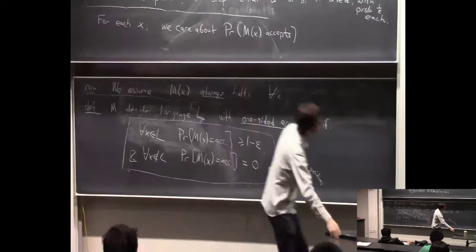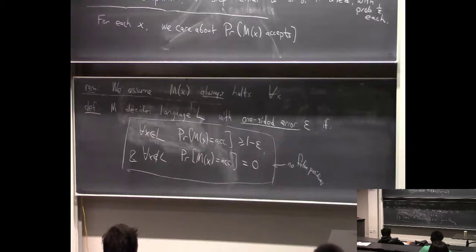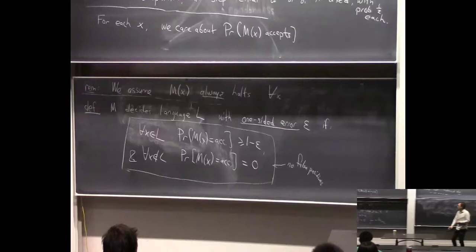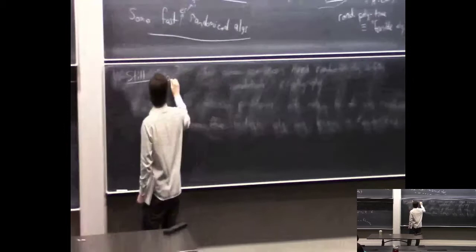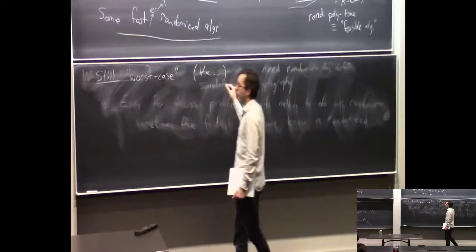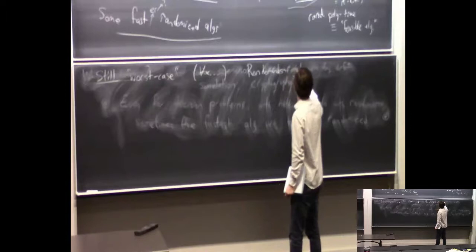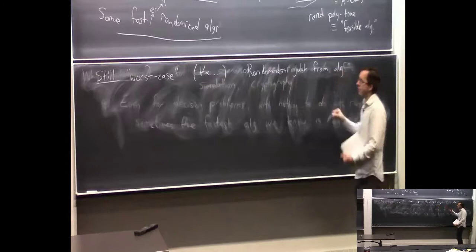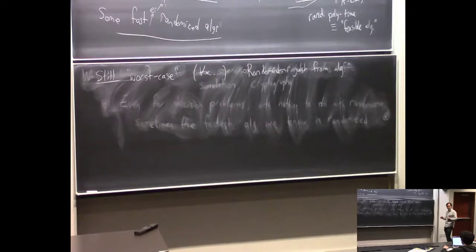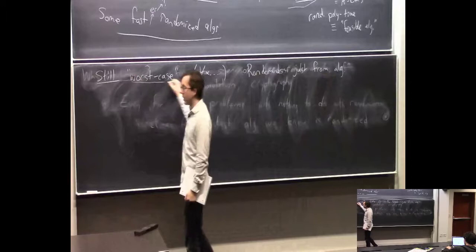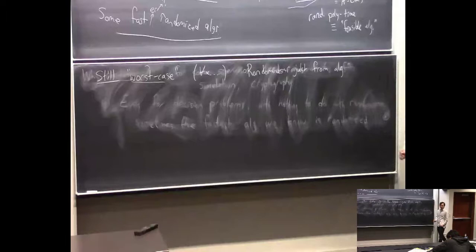An important point: this is still a worst-case notion, in the sense that it's a condition that has to hold for every string, every input. No matter what the input is, you have this guarantee. The only randomness comes from the algorithm itself — not from considering random inputs. We're not considering what happens for random inputs or what probability the machine does this or that for a random input. It's always guarantees that hold for every x, and the only possibility of error comes from the coin flips of the algorithm.